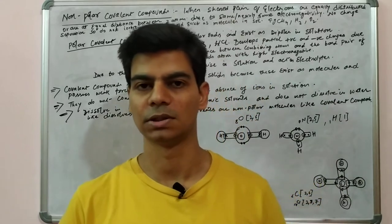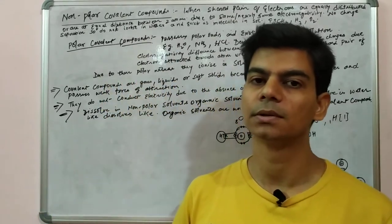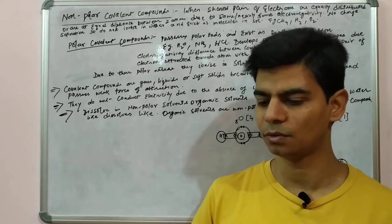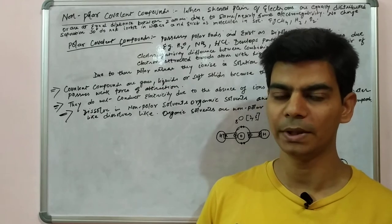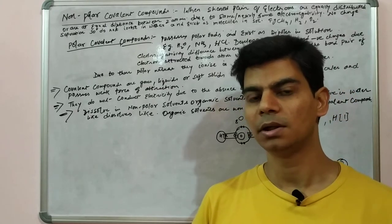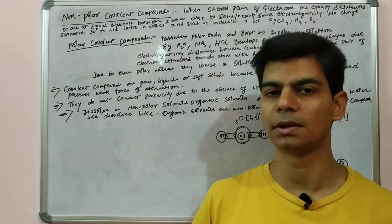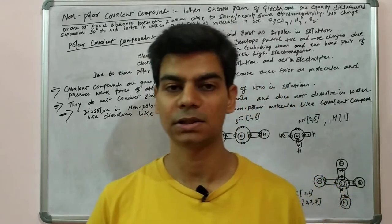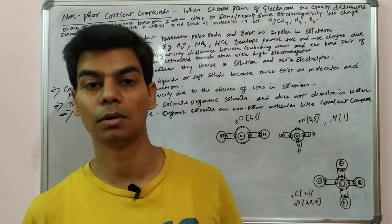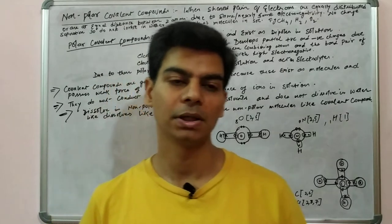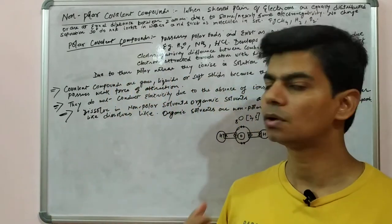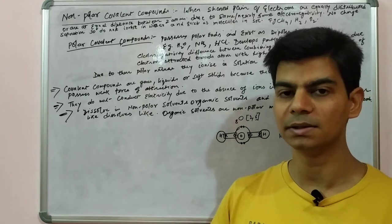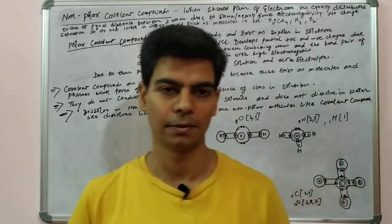Such covalent compounds, in which the combining atoms possess different electronegativity, are polar in nature. When dissolved in water they form ions, so they act as strong electrolytes. You may get exam questions like: why does HCl, although a covalent compound, still act as a strong electrolyte in water? Because it possesses dipoles and exists as ions in solution, so it acts as an electrolyte.